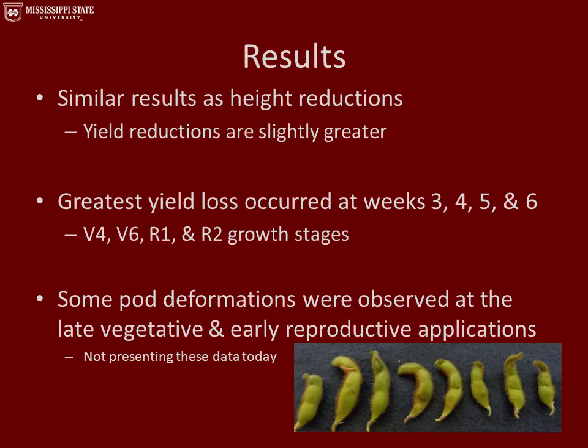Overall, we saw similar results in yield reductions as in height reductions, except yield reductions were slightly greater. The greatest yield loss occurred at weeks three, four, five, and six, which corresponded with the V4, V6, R1, and R2 growth stages. Something interesting we observed in the field — though not presented today — are pod deformations associated with applications made at the late vegetative and early reproductive timings.